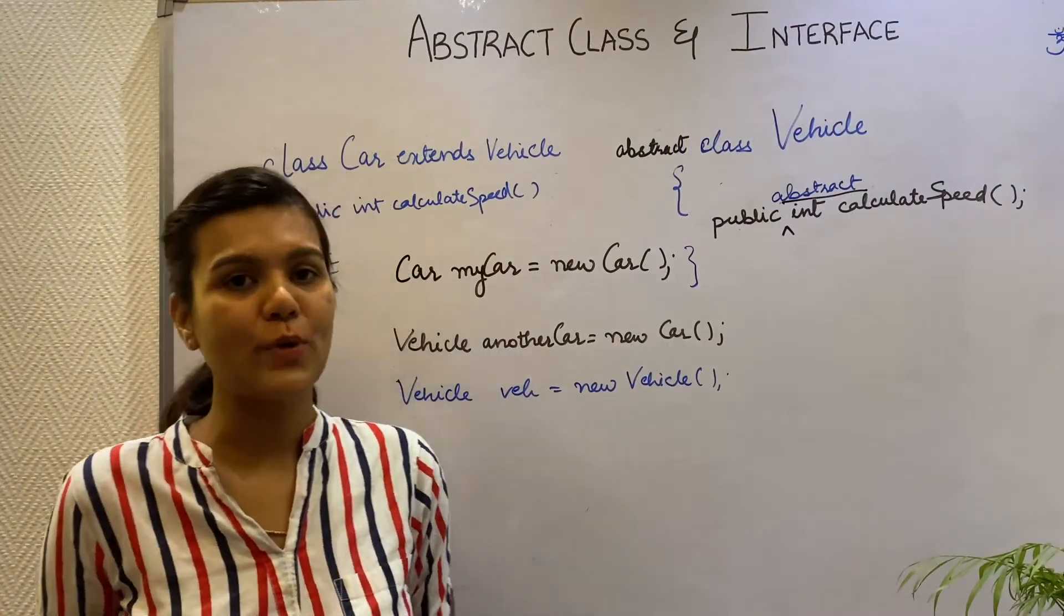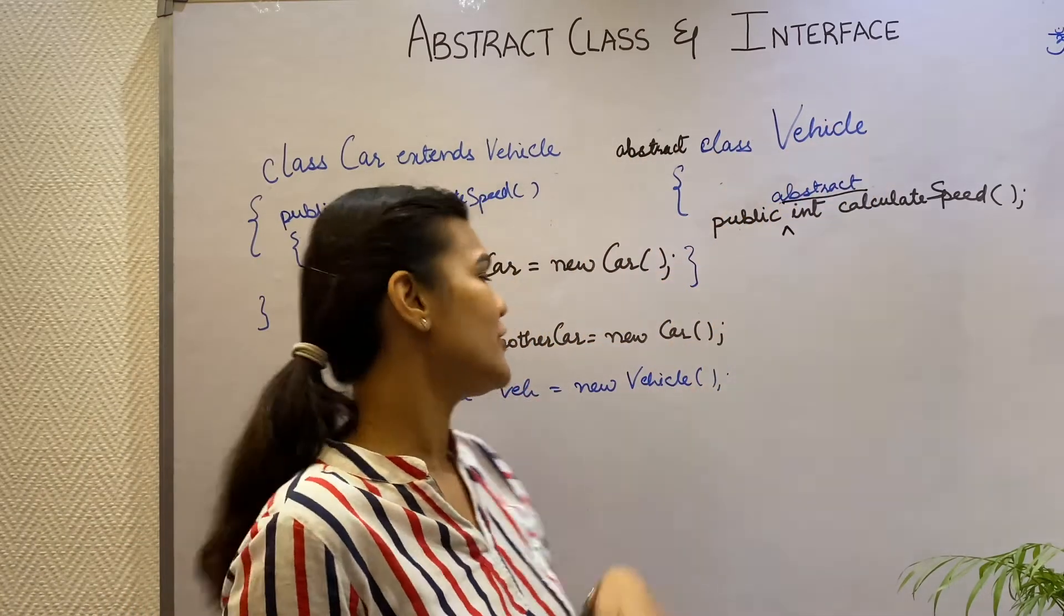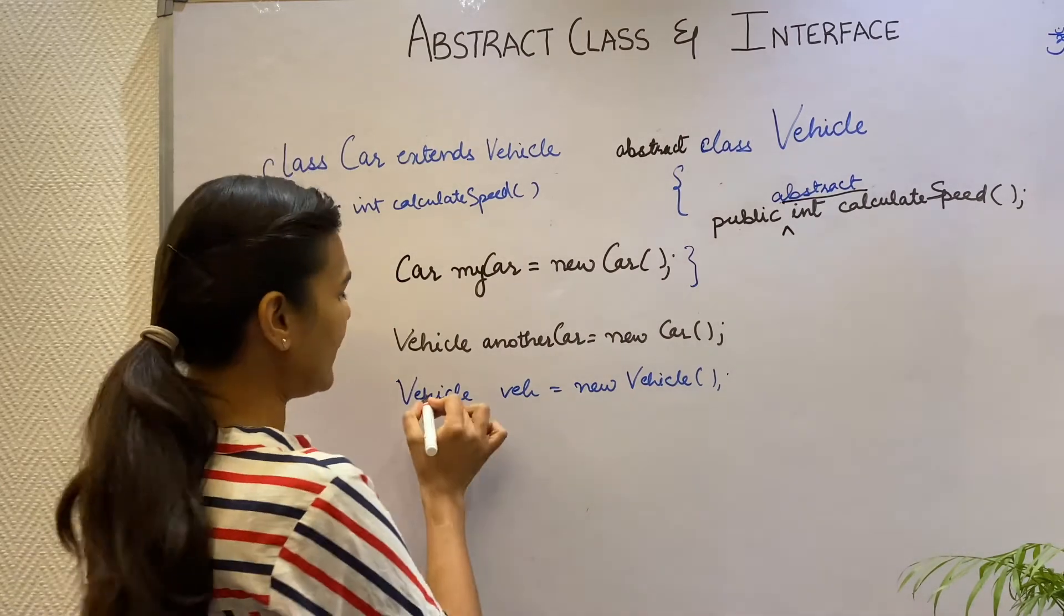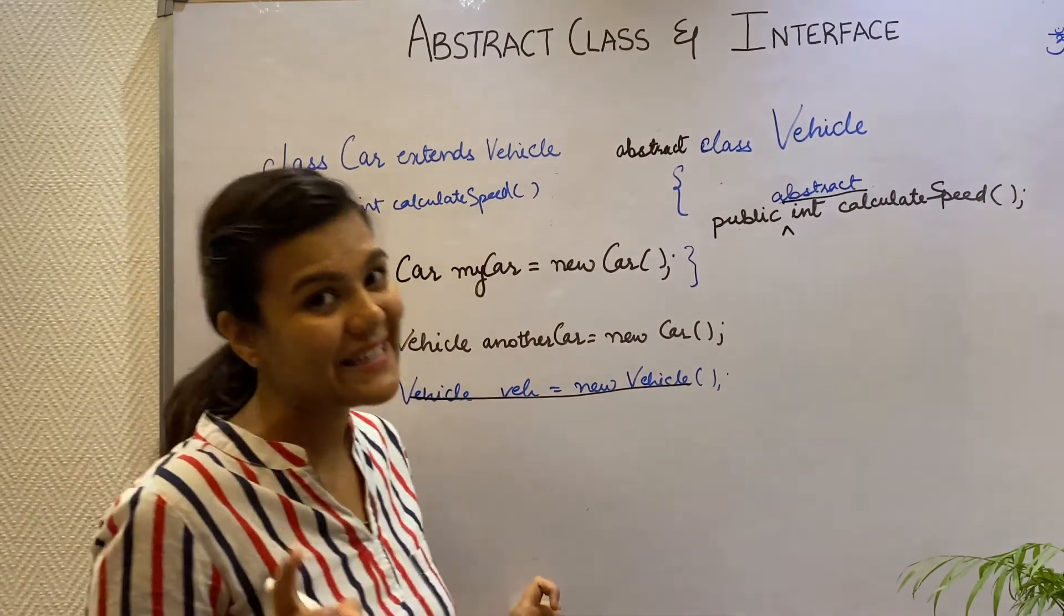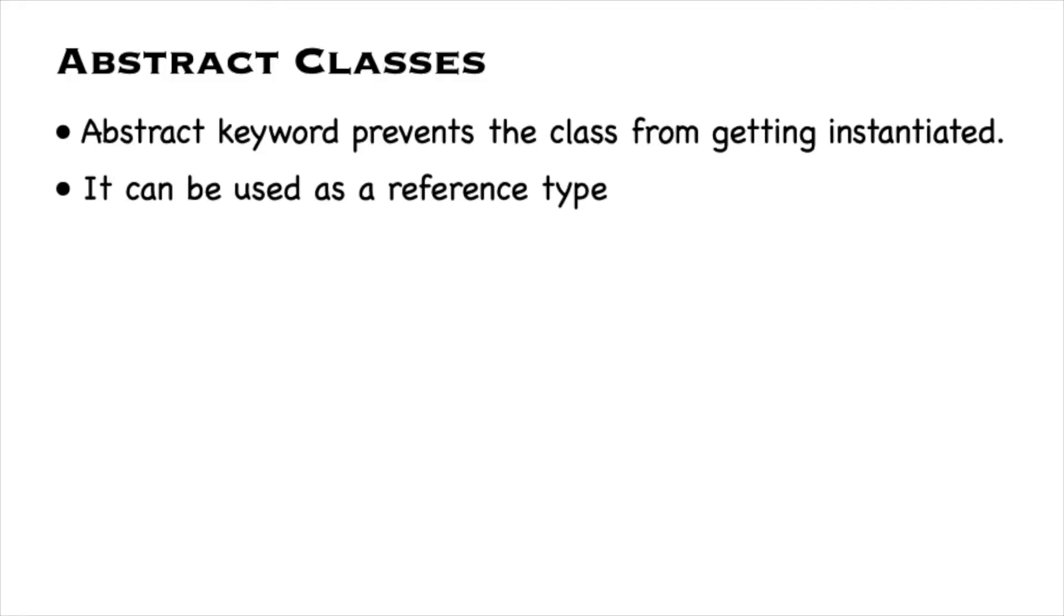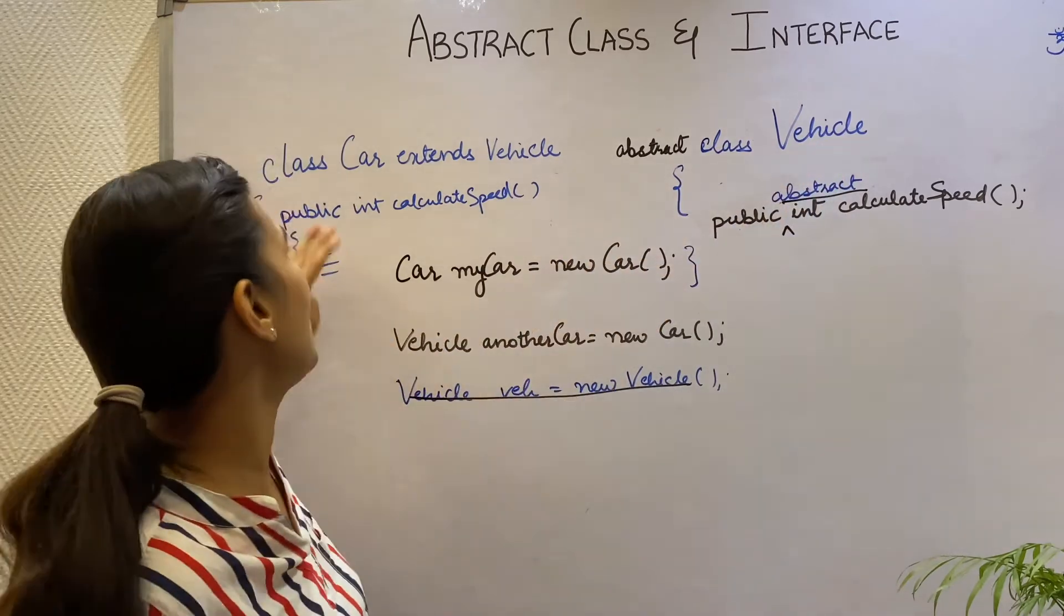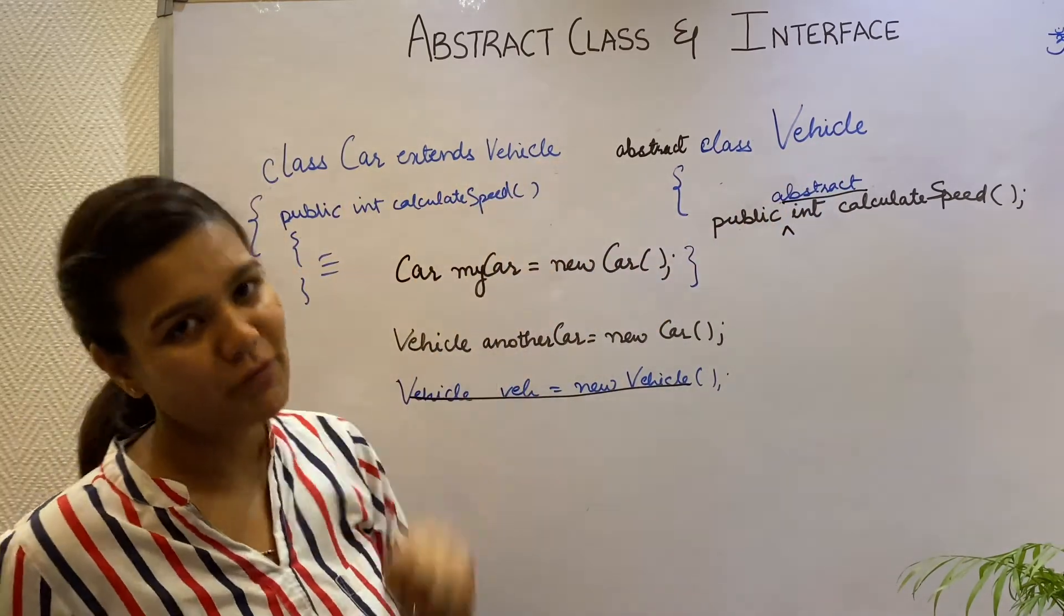Adding the abstract keyword in front of a class will prevent the compiler from creating an instance of a class. So you can see I have added the abstract keyword in front of my Vehicle class. So now I can certainly not create the instance of my Vehicle class. But I can definitely use my Vehicle class as my reference type. Making a class abstract will make it useful only if you can extend the class. So my Vehicle class becomes useful only when my Car class extends my Vehicle class.